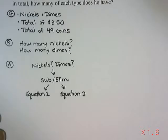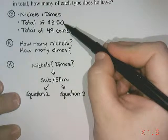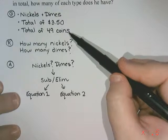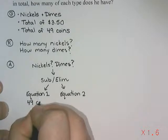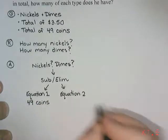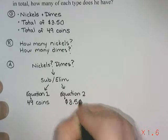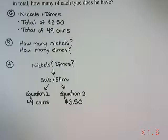How am I going to make two equations? Well, one piece of information is that we have a total of three dollars and fifty cents, and the other is a total of 49 coins. So one equation will come from the 49 coins and the other from the three dollars and fifty cents. It's a plan to help us figure out where we're going from here.